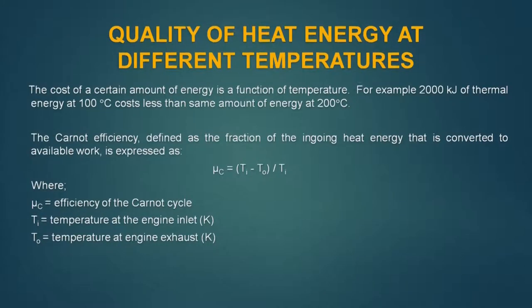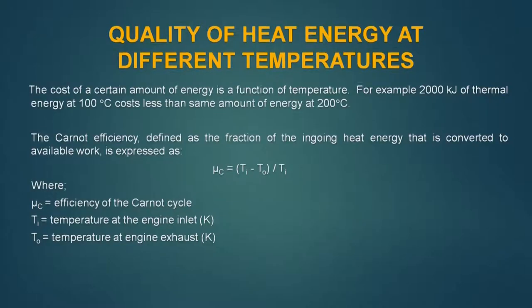Let us examine the quality of heat energy at different temperature levels. This is necessary because in process integration, where possible, we try to substitute high temperature heat energy with low temperature heat energy, since low temperature heat energy costs less. In this lecture we will find the scientific fundamentals behind this argument. The cost of a certain amount of energy is a function of temperature — for example, 2000 kilojoules of thermal energy at 100°C costs less than the same amount at 200°C.